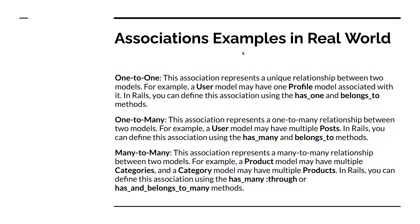The other association is one-to-many. This represents a one-to-many relationship between two models. For example, a user can have multiple posts. You use `has_many` and `belongs_to` associations — the user `has_many :posts` and a post `belongs_to :user`.